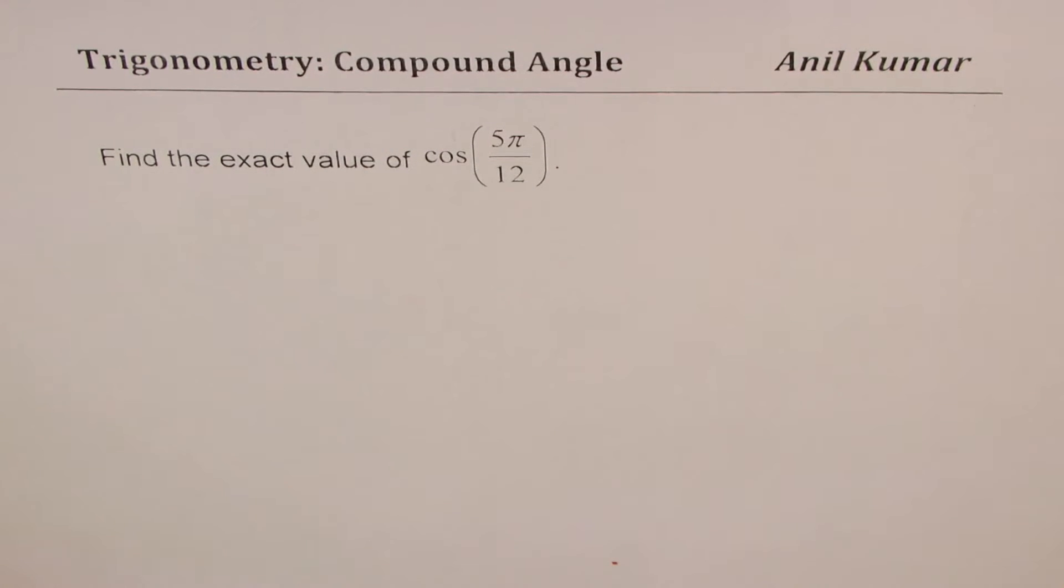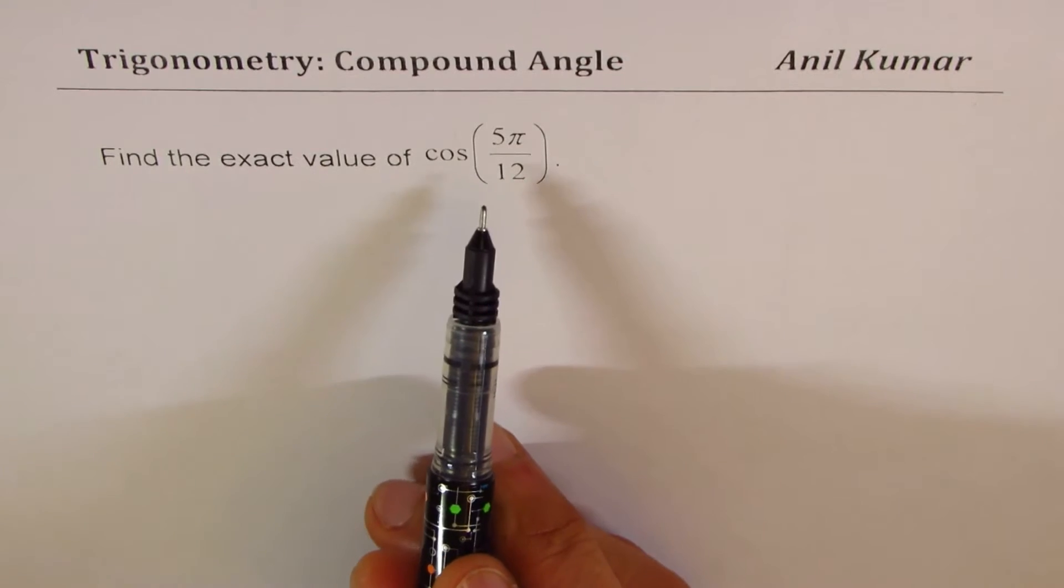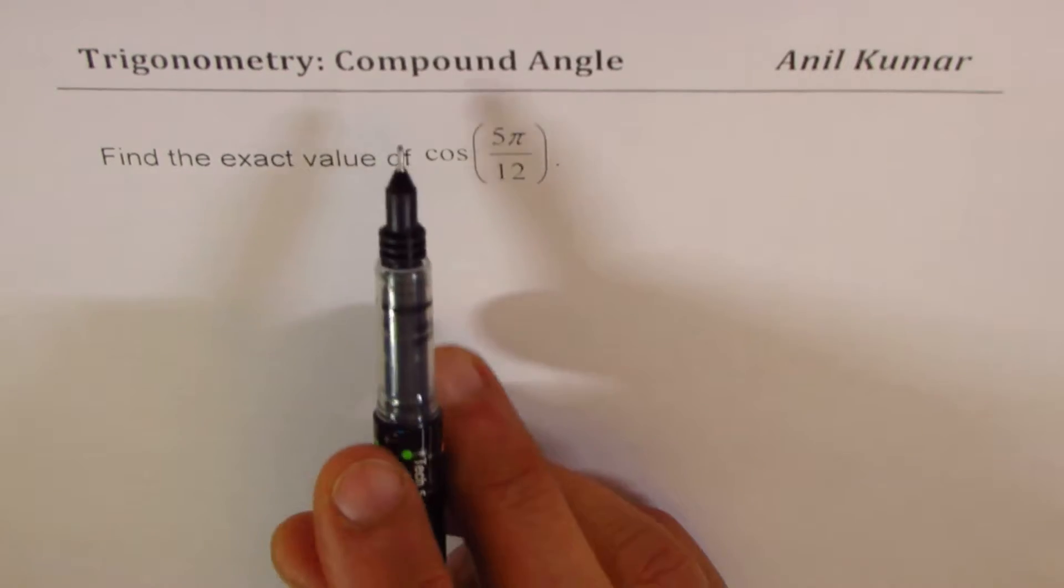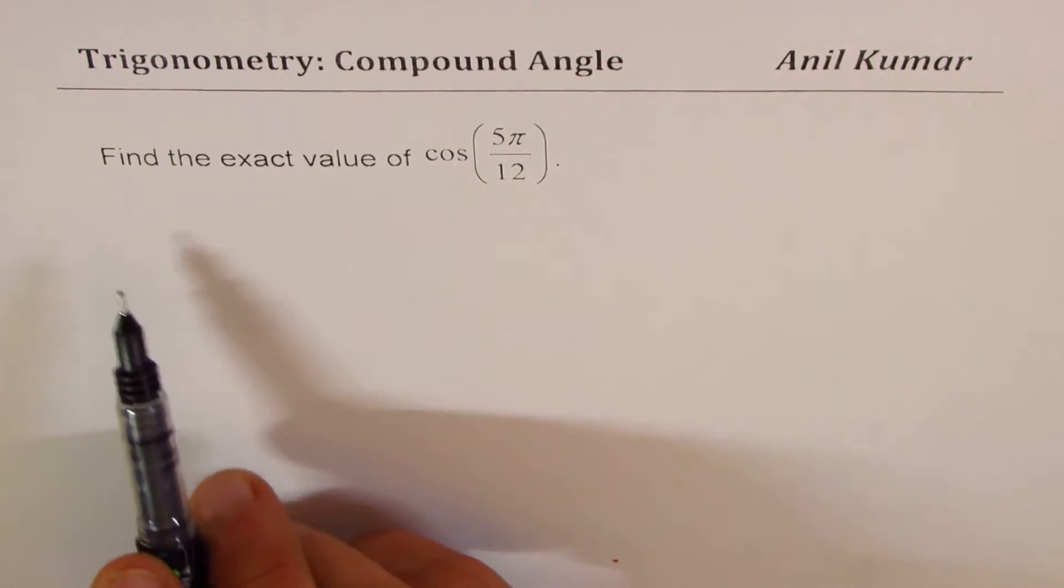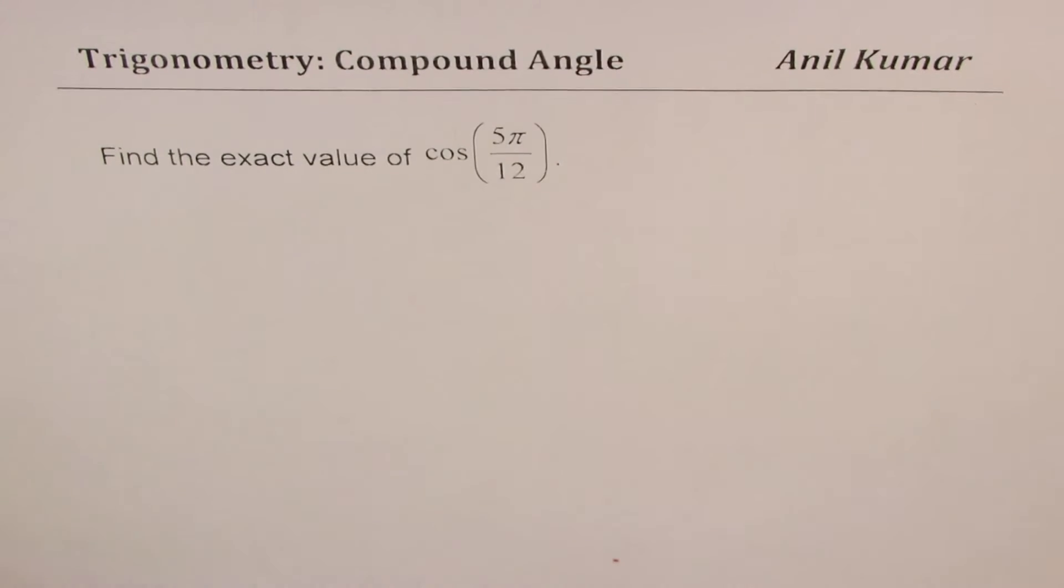I'm Anil Kumar sharing with you a question to find the exact value of a trigonometric ratio which may involve compound angles. The question is: find the exact value of cos(5π/12).